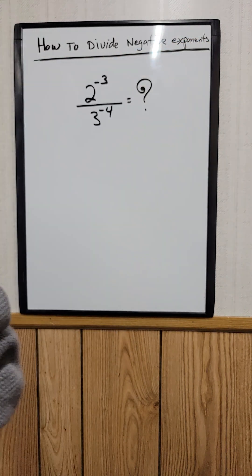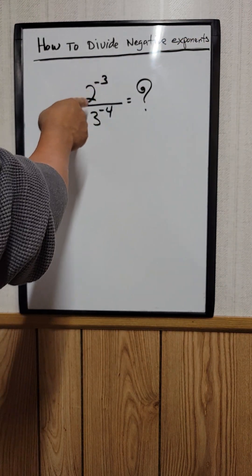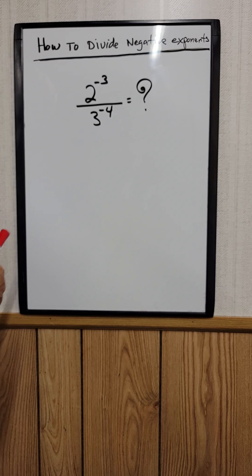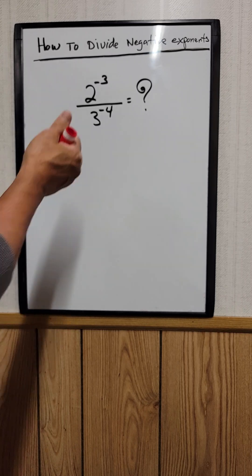How to divide negative exponents. For example, right here, 2 to the negative 3 divided by 3 to the negative 4. What is that equal to?